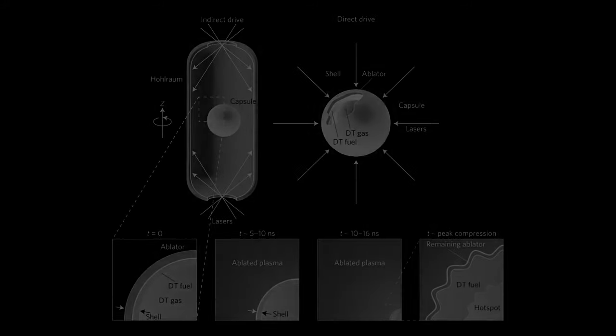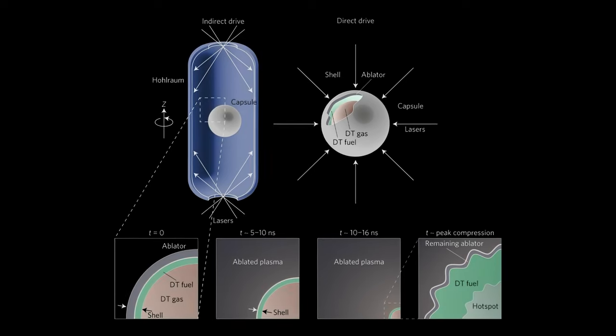Instead of being focused on the fuel pellet itself, the lasers converge on the walls of the holoram, a diamond tube holding the fuel material.